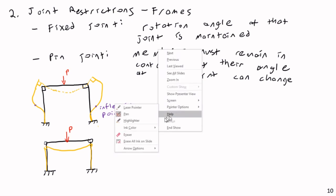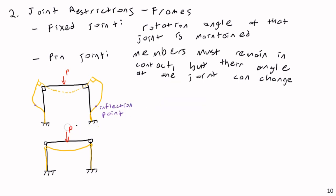So we can predict the deflected shape of frames and beams using both the support conditions and the joint restrictions. This is not an exact science, but it is useful even before you put pen to paper and start doing calculations. It is also useful when doing the force method to find redundants or indeterminate forms that we can get rid of — and we'll explore that more when we look at the force method on Thursday. All right, that'll do it for today.